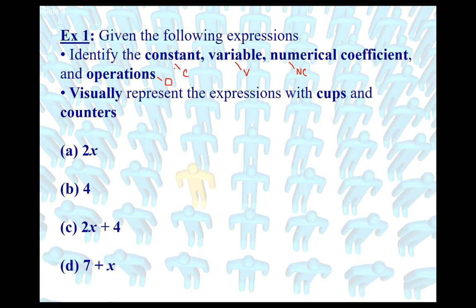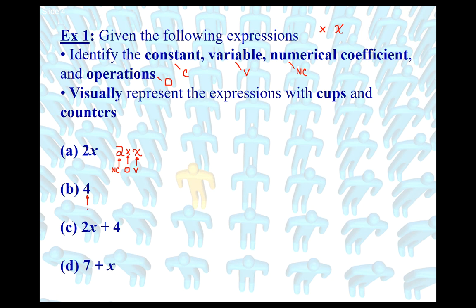For part a, I have 2x, which is the same as 2 times x. The x is the variable (V), the multiplication sign is the operator (O), and the 2 is attached through multiplication, so it is the numerical coefficient (NC). For part b, I just have an expression that's 4. If you have 4 by itself with no connection to a variable at all, that would just be a constant (C).